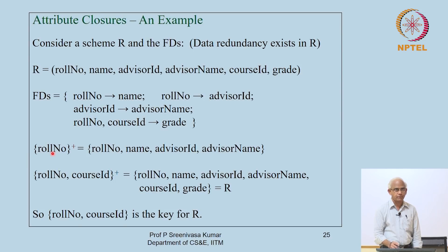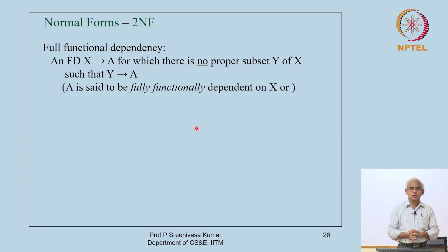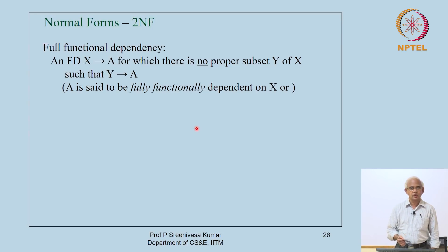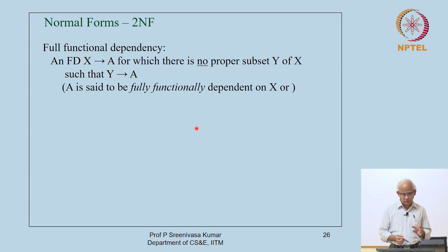So this is one way of identifying the keys of a relation — focus on those attribute sets whose closure equals R, given that you know the functional dependencies. In this lecture I want to talk about normal forms. At the beginning of this module I told you that normal forms are basically certain kinds of constraints, and in order to express these constraints we need theoretical tools — that is why we started looking at functional dependencies.